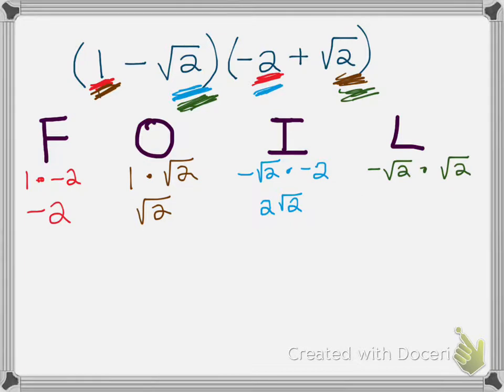Alright, so a negative times a positive is going to give me negative—we already know that. Square root of 2 times square root of 2 technically is square root of 4, but we know the square root of 4 is a perfect square. It equals 2. So this is going to equal negative 2.